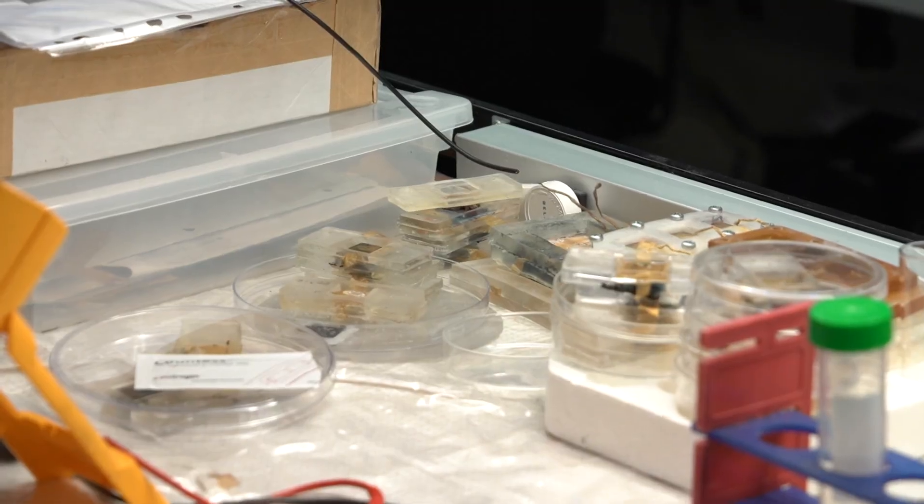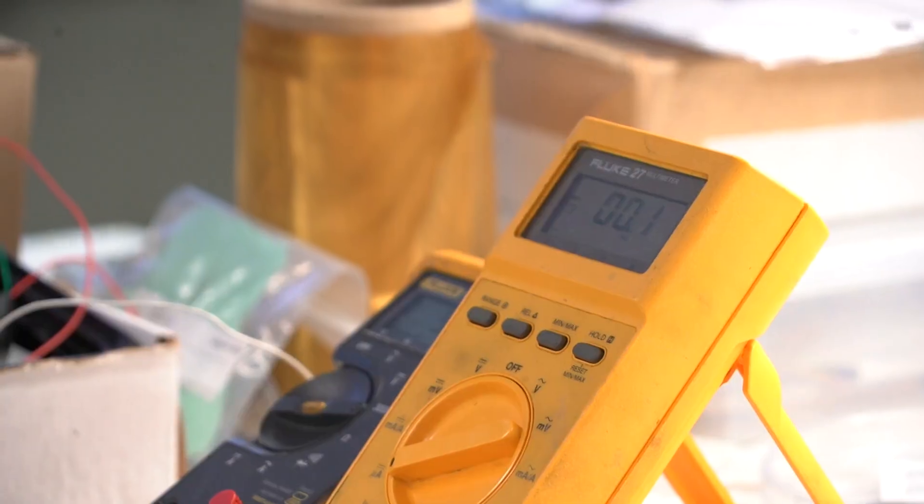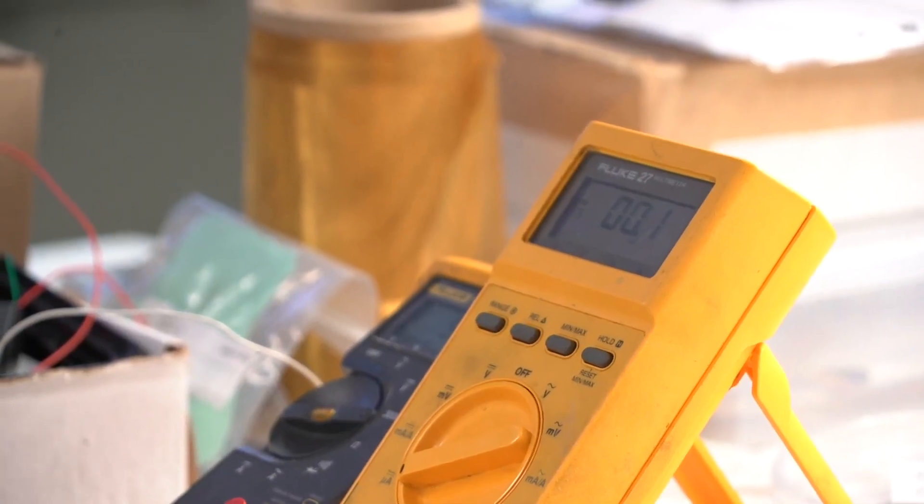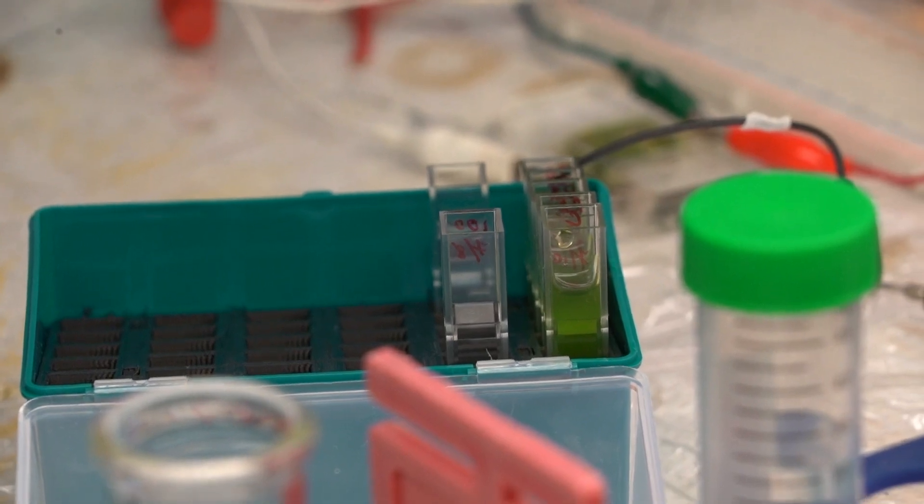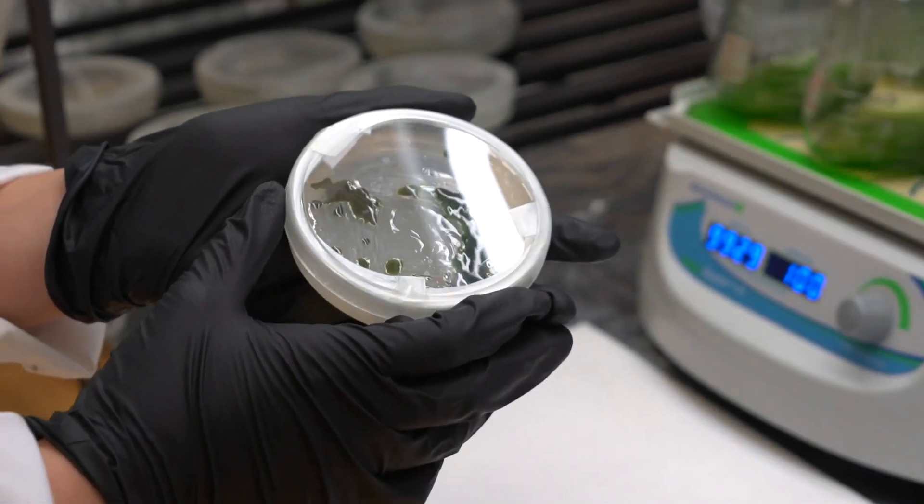During photosynthesis, algae absorbs photons and releases electrons. This mechanical engineering lab at Concordia has created a new cartridge which captures those electrons and creates about one volt of electricity. That's enough to power one LED light.